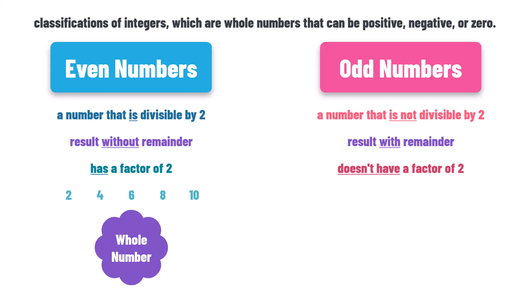Some examples of odd numbers are 1, 3, 5, 7, 9, and so on. If we try to divide all these numbers by 2, we will always get a decimal number.